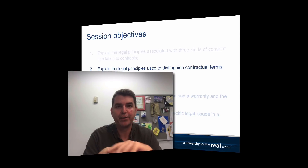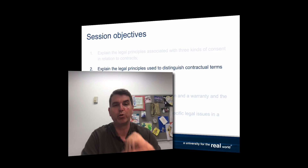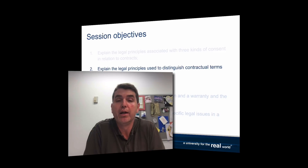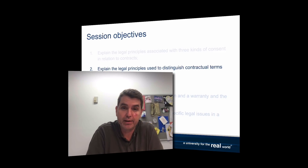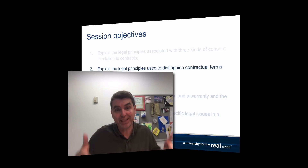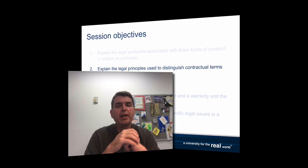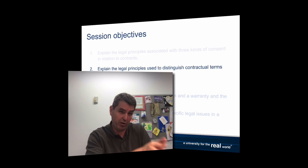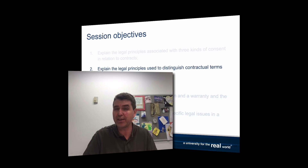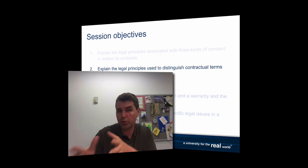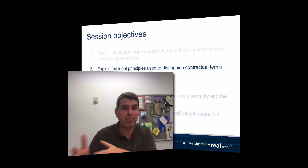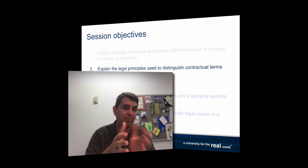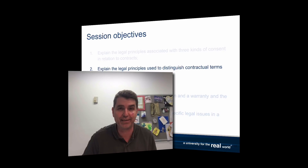We formed a contract and we're sure that it's enforceable. So now the next step is to understand what's in the contract — what are the terms of the contract. To do that we want to be able to distinguish the terms of the contract from other statements or representations that might be made that aren't part of the contract.